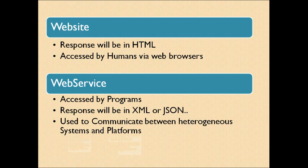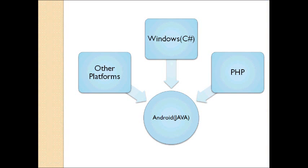The response from a web service will be in JSON or XML format. XML and JSON are the message format between sender and requester. Basically, web services are used to communicate with heterogeneous systems. For example, if you have an Android app and you want to communicate with other platforms like PHP websites or any Windows app, you are going to respond with JSON format or XML format. That's the way communication is done between two platforms via web service.